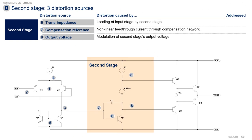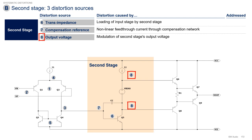For the second stage, we have three distortion sources. First, the second stage's transimpedance, which relates to the loading of the input stage by the second stage. Second, compensation reference modulation, which relates to the non-linear feed-through current through the compensation network due to modulation of the compensation reference voltage. And third, output voltage, which relates to changes in the second stage's transimpedance due to modulation of the second stage's output voltage.